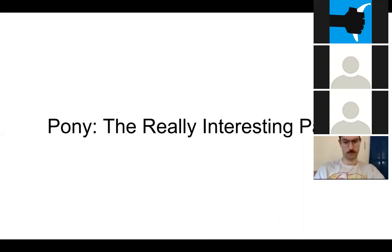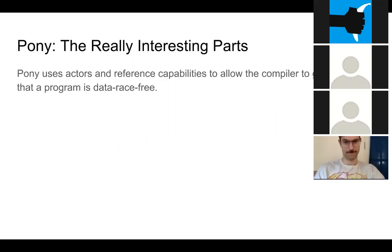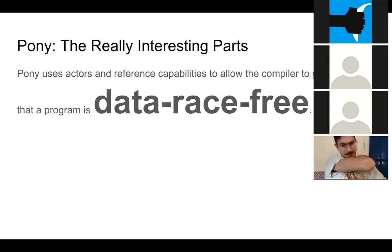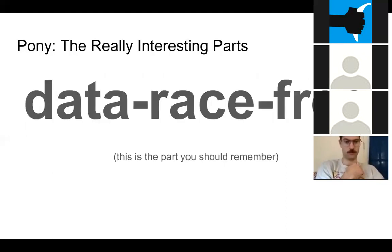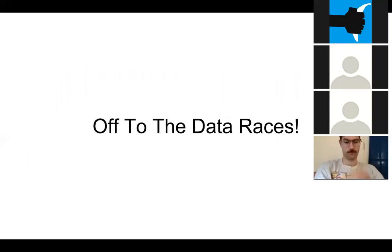Now let's talk about the really interesting parts of Pony. Pony uses actors and reference capabilities to allow the compiler to guarantee that a program is data race free. This is really what sets Pony apart from just about any other programming language out there. Data race free — this is the important part about Pony, this is why you should be interested in learning Pony. Take this away: data race free.